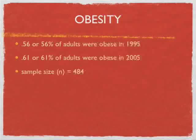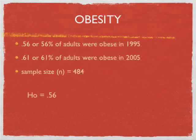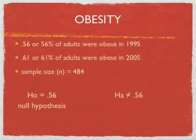The data we used last night was 0.56 of adults were obese in 1995. 0.61 were obese in 2005 with a sample size of 484. The null hypothesis is equal to 0.56, that means we're saying we do not think that people are getting more obese, so that's our null hypothesis. The alternative hypothesis is it's not equal to 0.56.